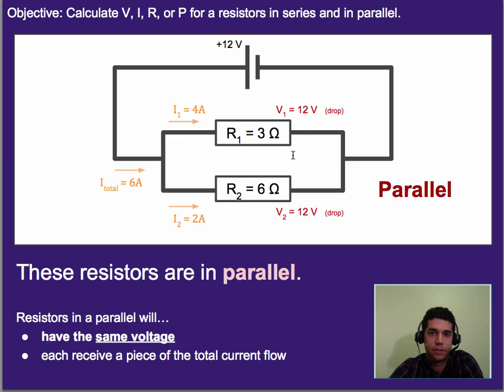This is in fact called a parallel circuit, or more accurately I should just say, these two resistors are in parallel. As we've seen before, that means they get the same voltage, or the total voltage in this case, and they each receive a piece of the total current flow. So the current flow adds together, and then as they combine back again, the total current will be over here.